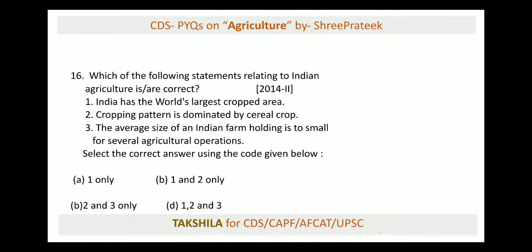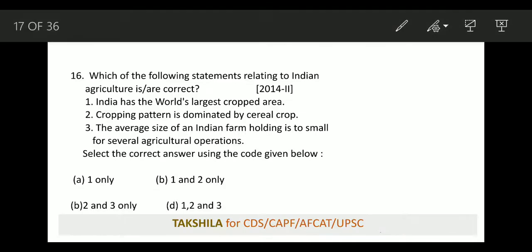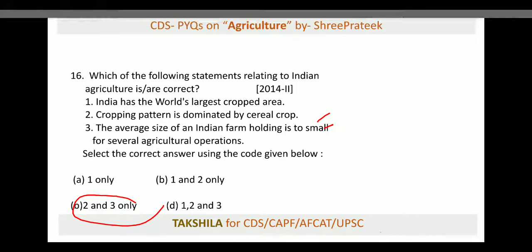Next: which statements relating to Indian agriculture are correct? (1) India is the world's largest cropped area; (2) cropping pattern is dominated by cereal crops; (3) average size of land holding is too small for several agriculture operations. Statements 2 and 3 are correct. India does not have the world's largest cropped area, so statement 1 is wrong. The best answer is 2 and 3.